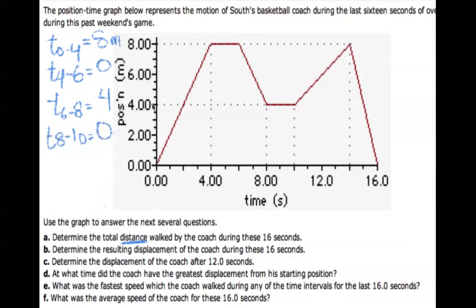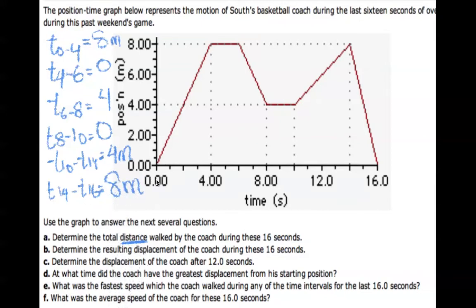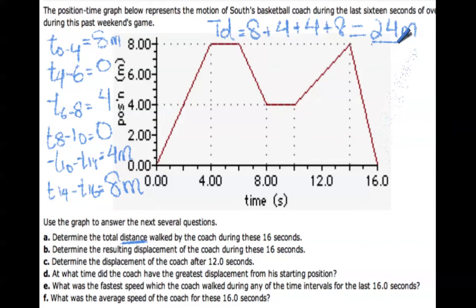From eight to ten he moved zero meters. From time ten to fourteen he moved from the four-meter position to the eight-meter position — that's four meters again. Then finally from fourteen to sixteen he moved back to the origin, covering eight meters. So the total distance is eight plus four plus four plus four plus eight, which gives us 24 meters. The coach walked 24 meters during these 16 seconds.